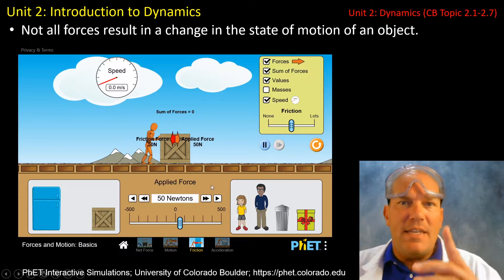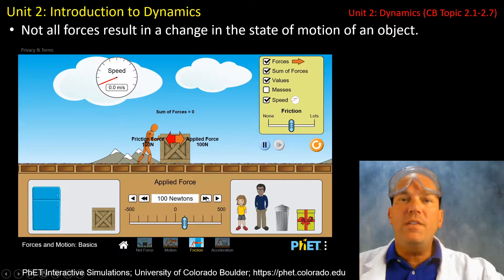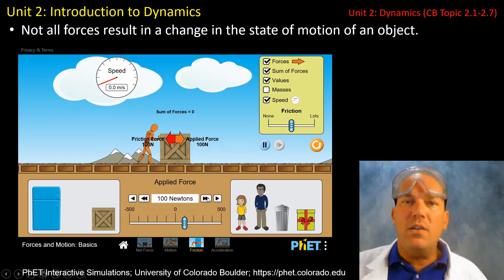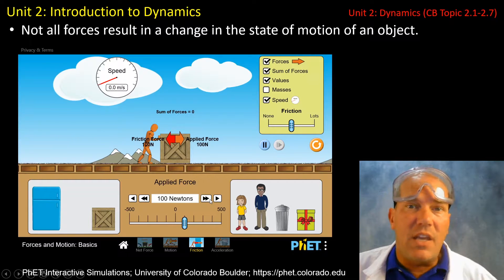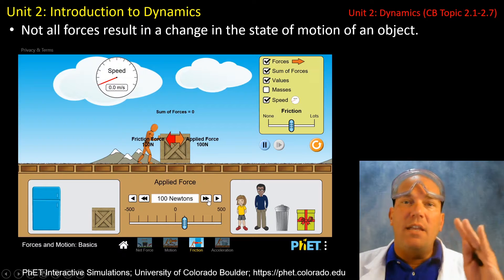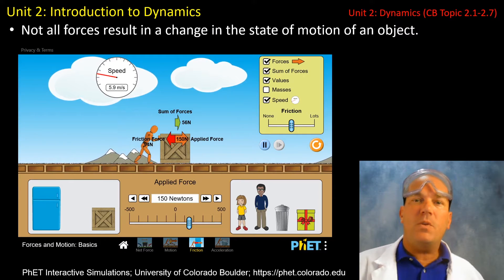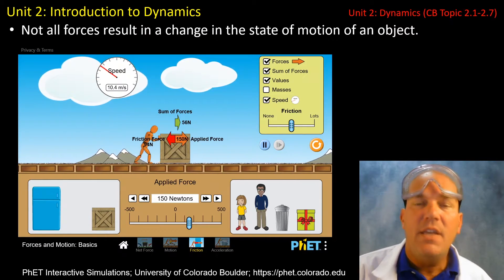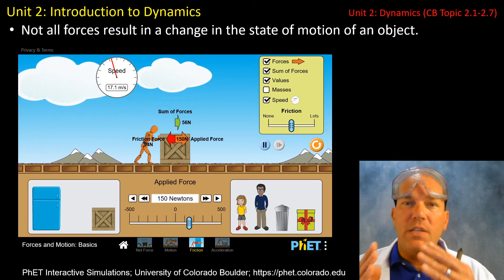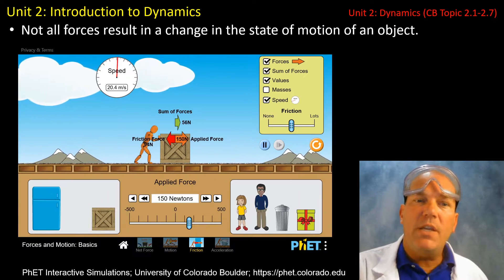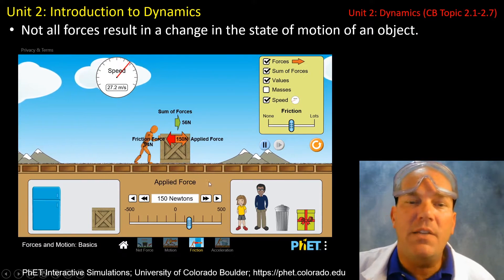The key is that the net force — the sum of these forces, one to the left and one to the right — equals zero. Increasing the force to the right to 100 Newtons, we still see no change in the state of motion and no change in velocity. Now applying an even greater 150 Newton force to the right, we now see the crate accelerate from rest and move off to the right. You can see the speed meter on the screen — this object's speed is increasing over time, thus this object is accelerating.